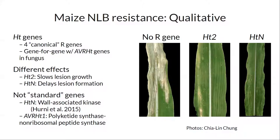Not many of these genes are actually confirmed, cloned, or known. Of the two that are, they're not the standard R gene and AVR gene. The R gene that is cloned is HTN, which is a wall-associated kinase — not the typical cytosolic NBS-LRR gene. AVR HT1 in the fungus, which Gillian Turgeon's group has been working on, is also unusual: most fungal effector genes are small secreted proteins around 20 amino acids, but AVR HT1 is a secondary metabolite gene that has both polyketide synthase and non-ribosomal peptide synthase.